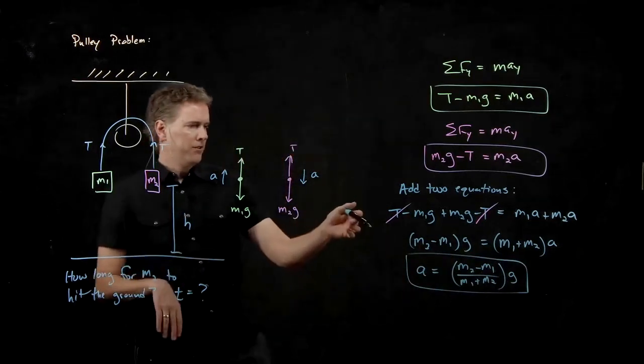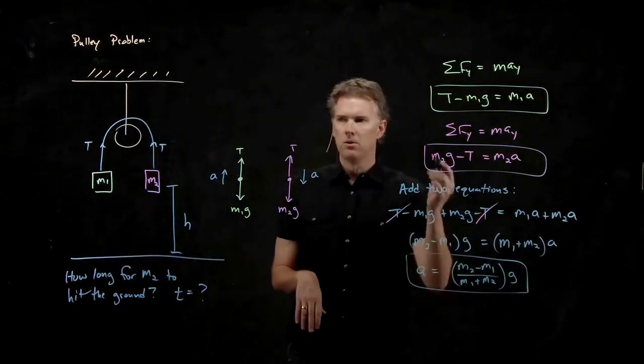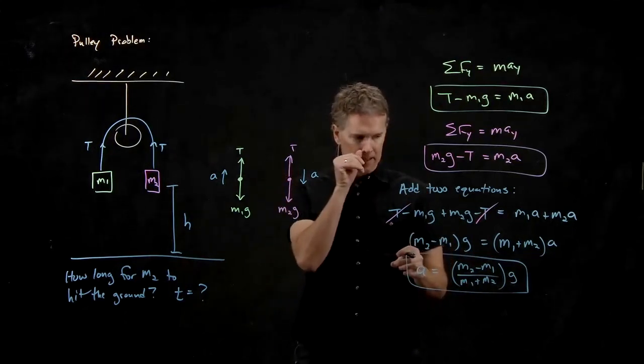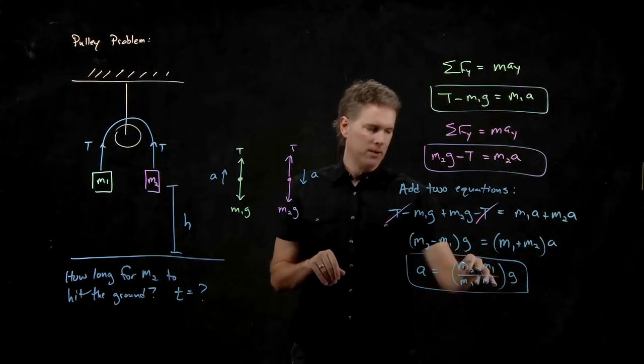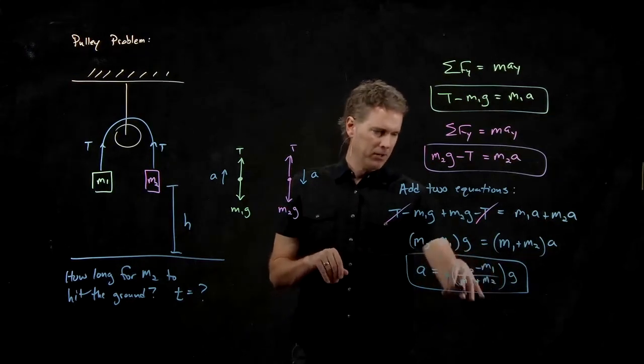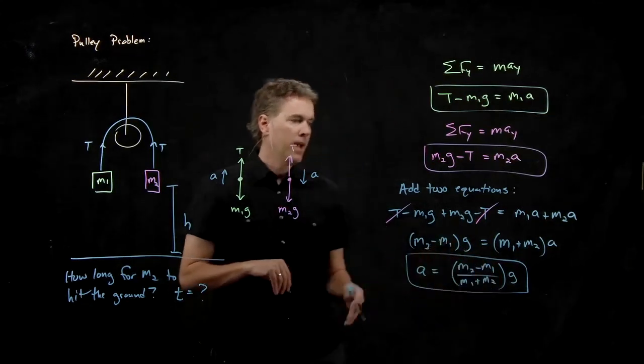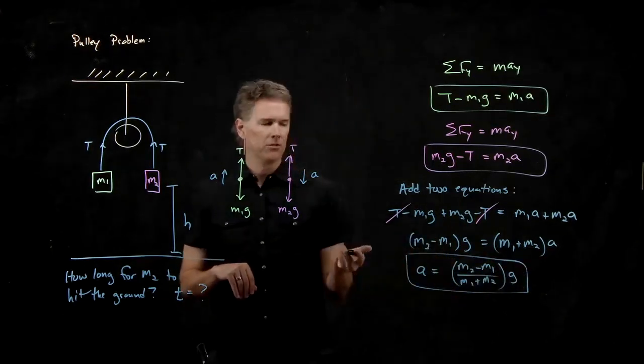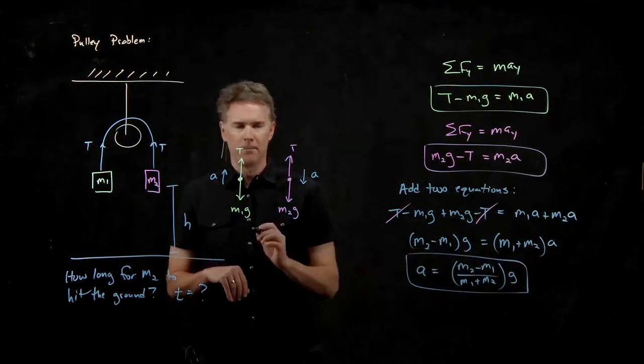When we get an answer like this, we've got to go back to the double check part. That was our fifth step. Do the units work out? Well, kilograms on top is going to cancel with kilograms on bottom. And so we're going to end up with units of G, which is, of course, meters per second squared, which is what we want for A. So that makes sense.